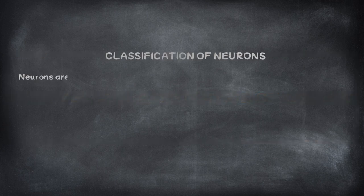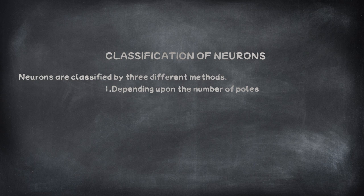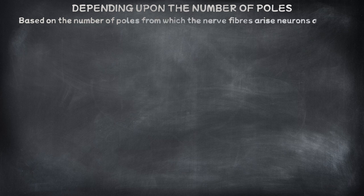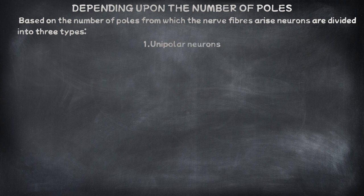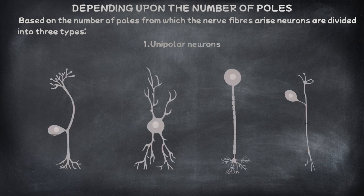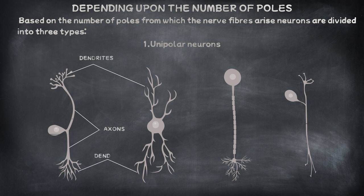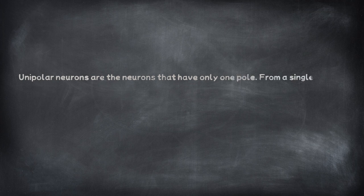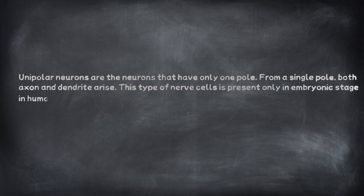Neurons are classified by three different methods: 1. Depending upon the number of poles, 2. Depending upon function, 3. Depending upon the length of axon. Based on the number of poles from which nerve fibres arise, neurons are divided into three types. Unipolar neurons are neurons that have only one pole, from which both axon and dendrite arise. This type of nerve cell is present only in the embryonic stage in human beings.